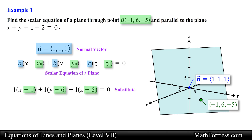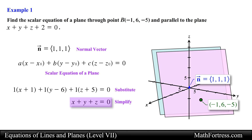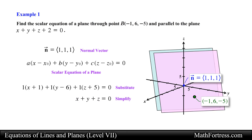We substitute the coordinates of point B and the components of the normal vector, then simplify the expression. Doing that we obtain the following scalar equation of the plane, and this is our final answer. Let's take a look at the next example.